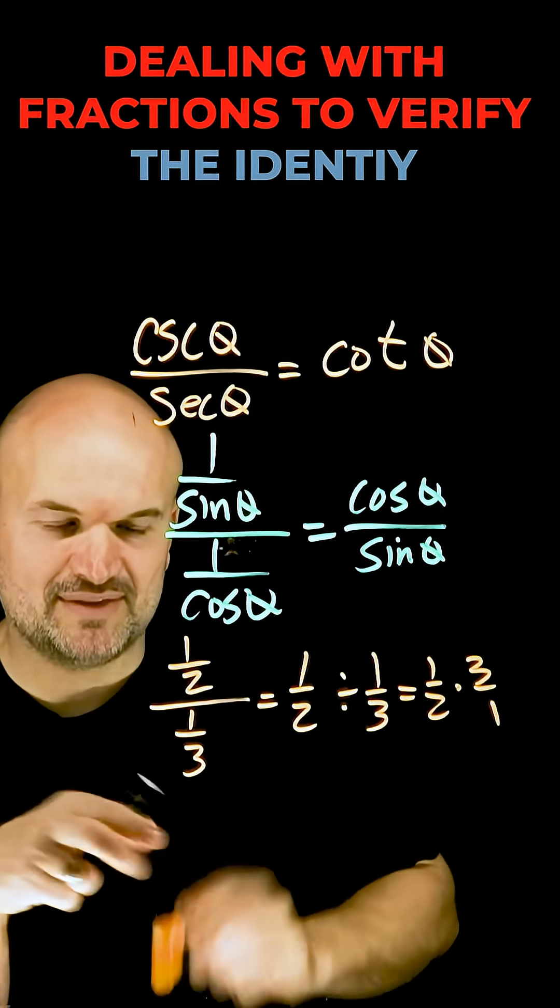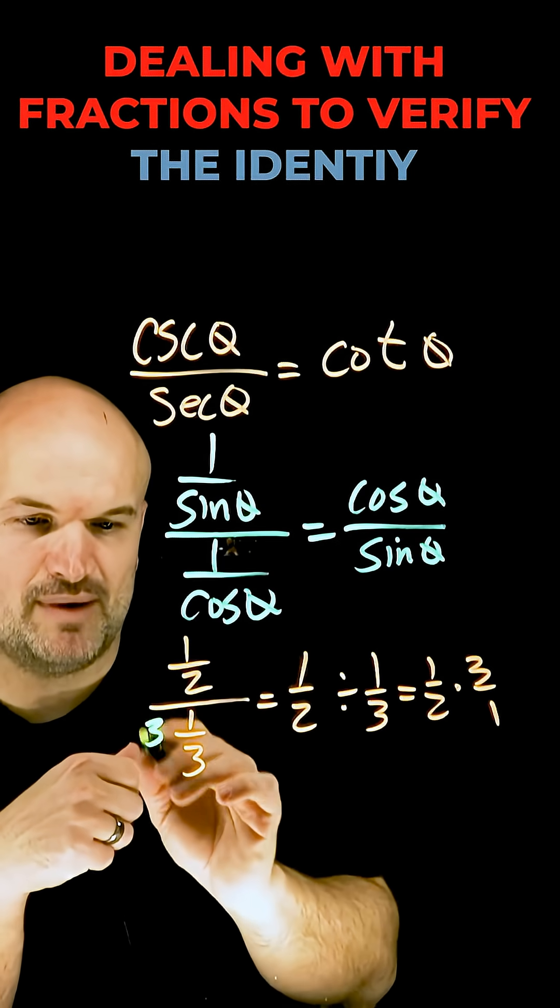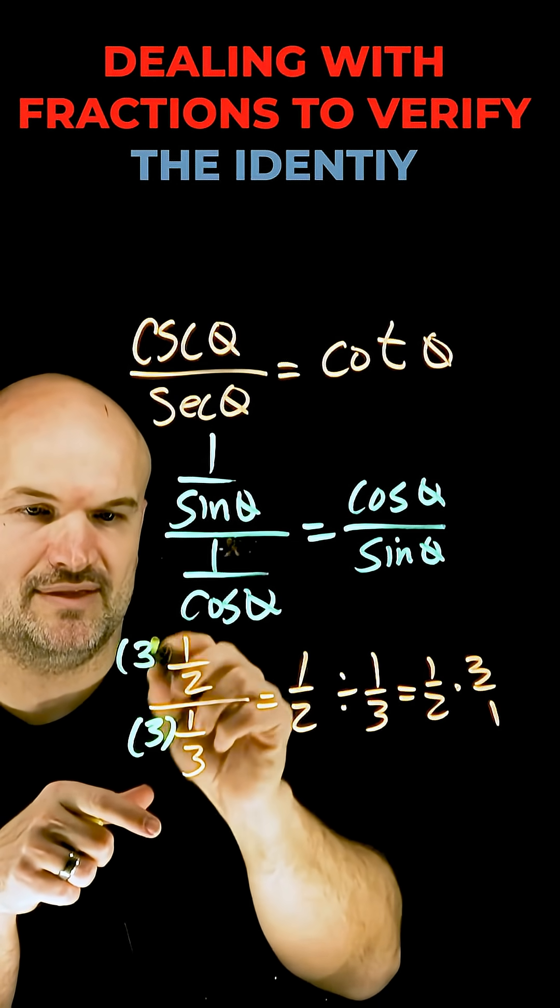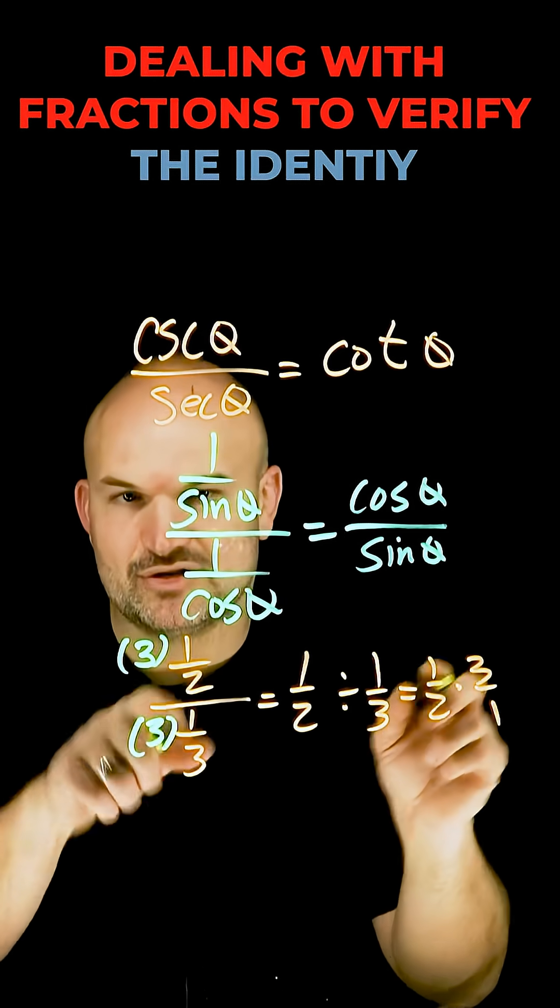Another way you can think about this is if I want to get rid of my divisor, I'm going to multiply it by three. I'm going to multiply three in the denominator as well as three in the numerator. That's the one half times three.